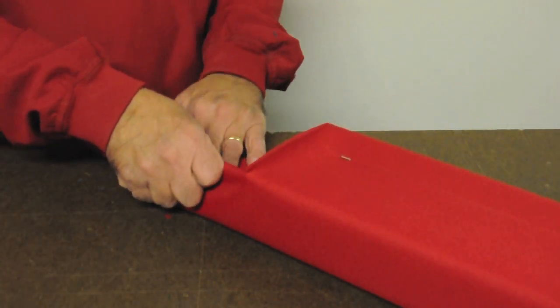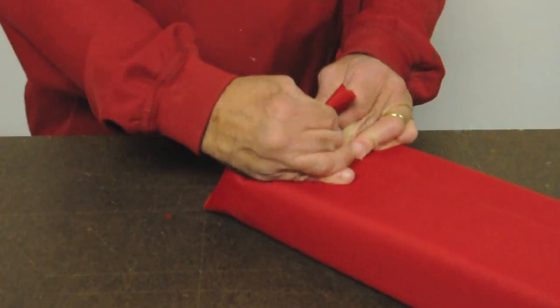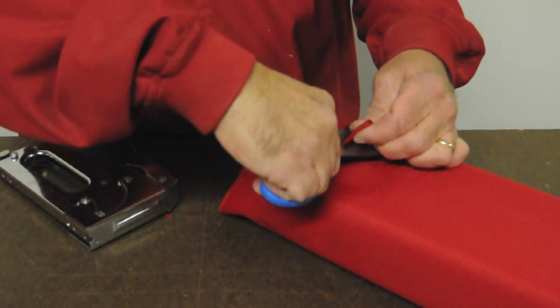Take each end and fold them just like you would wrap a present. Use your staple gun one last time to secure the ends in place. Cut off any extra fabric you might have.